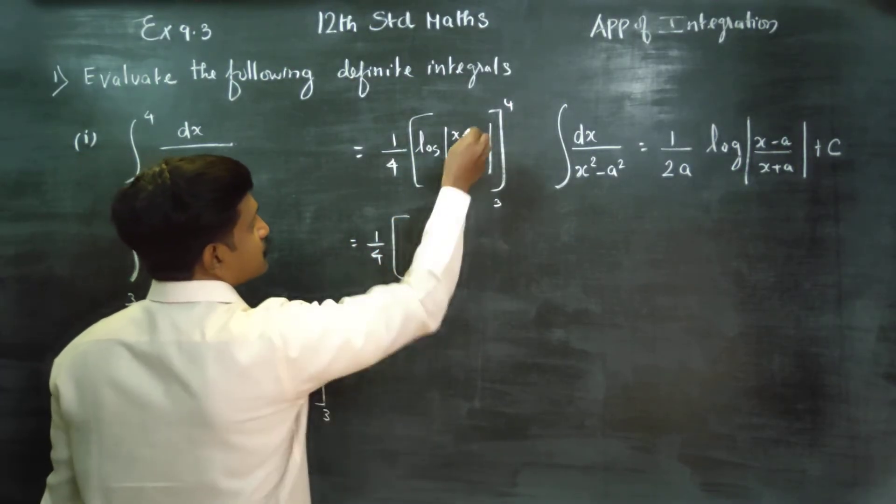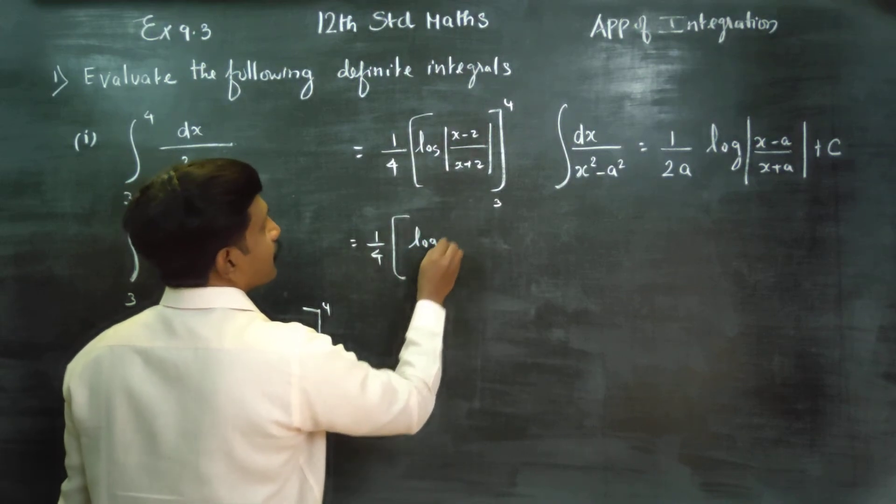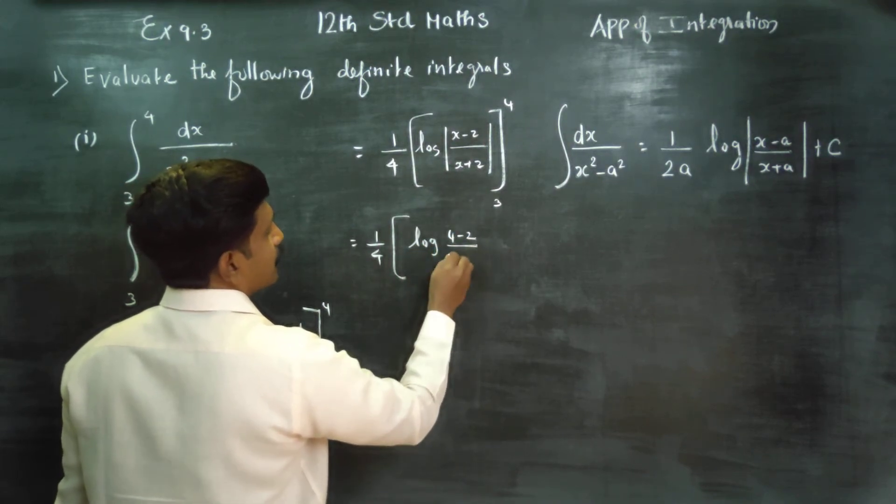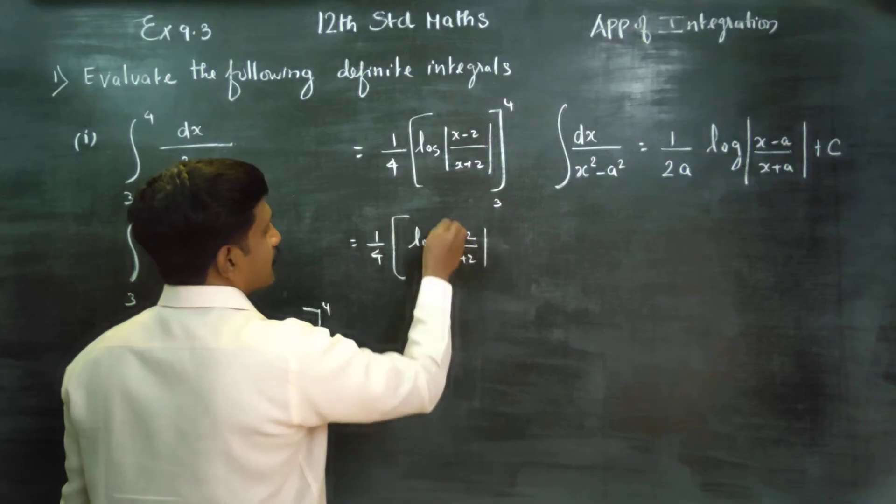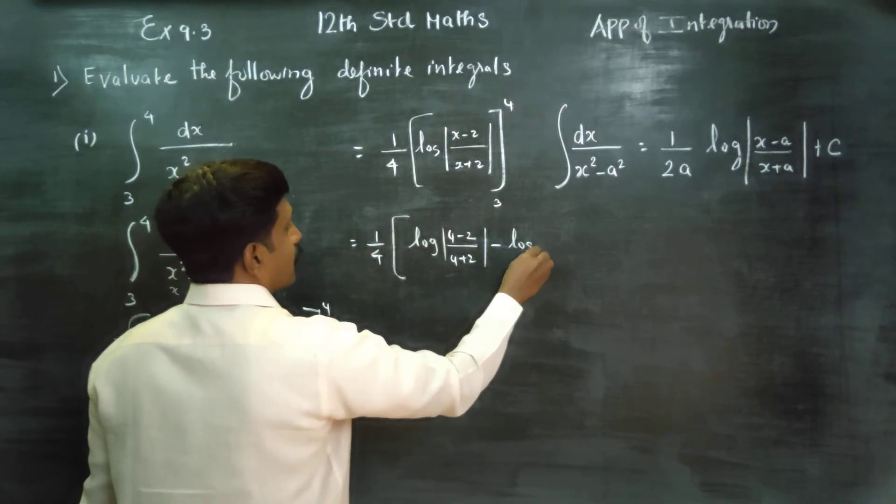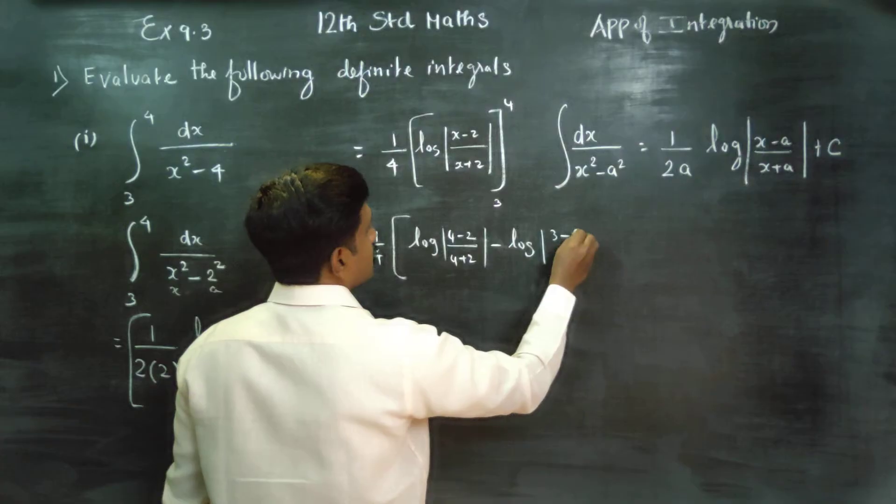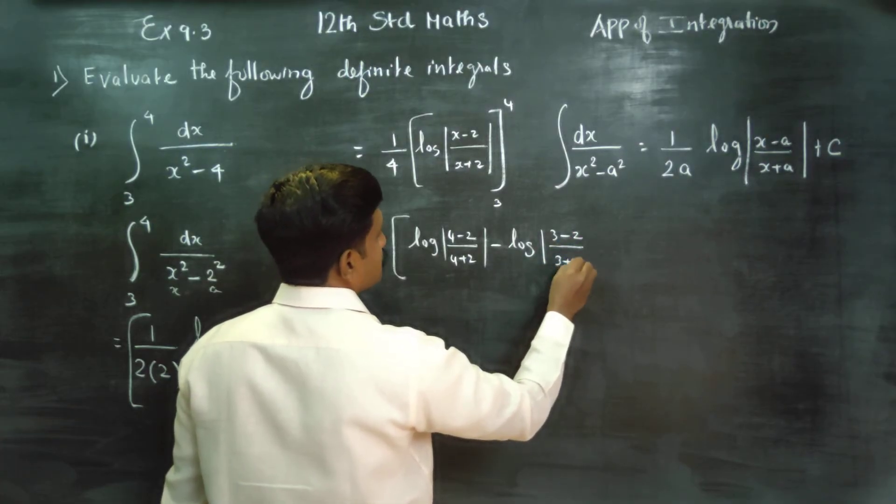I am going to substitute my upper limit. Logarithm of 4 minus 2 by 4 plus 2. Minus upper limit minus lower limit. Logarithm of 3 minus 2 by 3 plus 2.